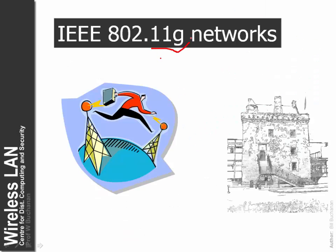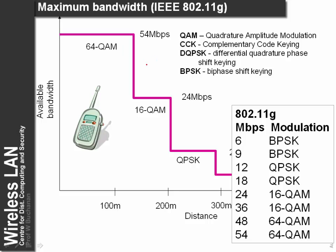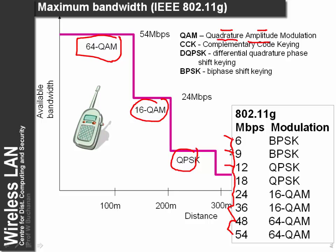An important standard now in wireless networks is 802.11g. It builds on 11b using the same frequency for compatibility, but allows up to 54 megabits per second. For this we use more enhanced modulation techniques such as 64 Quadrature Amplitude Modulation, which uses a mixture of both amplitude and phase. We can have 4 phases and a number of amplitudes. We can also have 16 QAM, down to differential quadrature phase shifting and biphase shifted keying. Basic bit rates are 54, 48, 36, 24, 18, 12, 9, and 6.